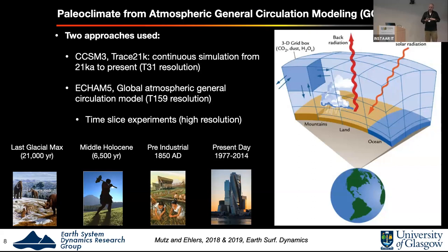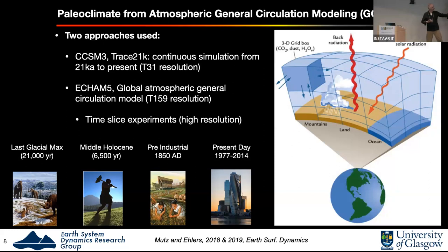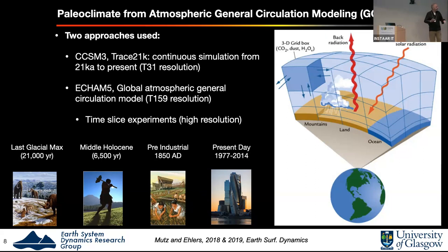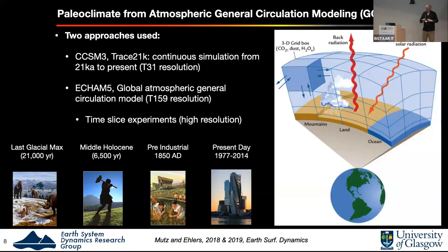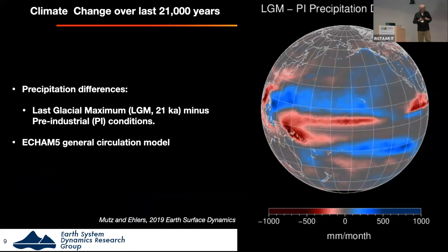Let's start with the paleoclimate model. We're running general circulation models using two different approaches. We're running global-scale models that are discretized in space and elevation, with boundary conditions reflecting land surface cover, sea surface temperatures, greenhouse gases, and so on. The two approaches are: first, the TRACE-21K experiment — a beautiful continuous simulation from the last glacial maximum to present, though at very coarse resolution. We've augmented that with high-resolution simulations using the ECM-5 model at 80 by 80 kilometers, done at discrete time steps to check how valid the results are from the coarser simulations — and in fact they work quite well.